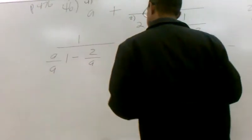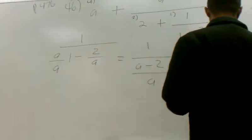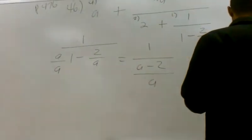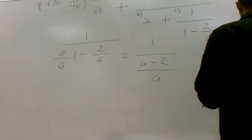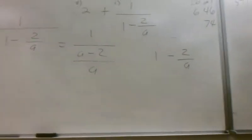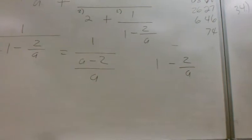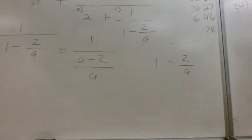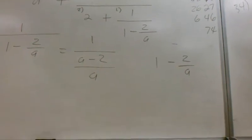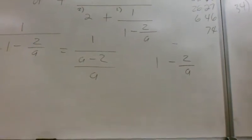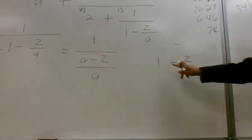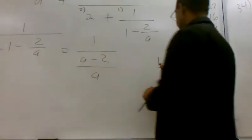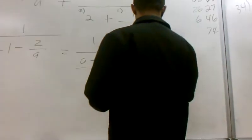Let's go over again. I got 1 minus 2 over a, right? So I need a common denominator, and that's going to be a. So I'm going to take that 1 and multiply it by a over a. Follow me?